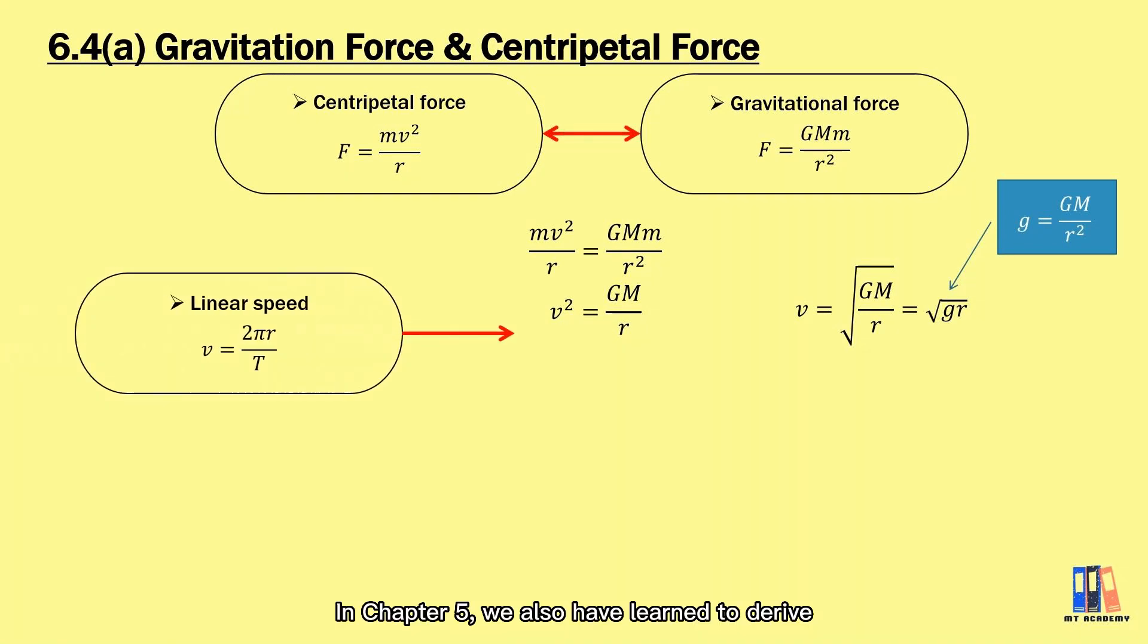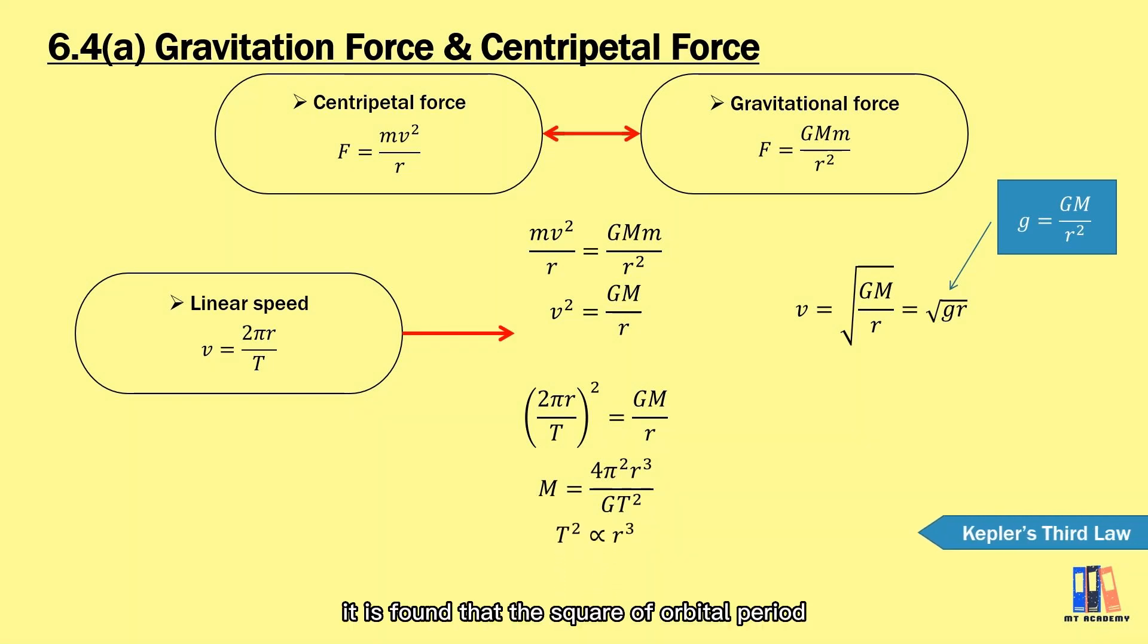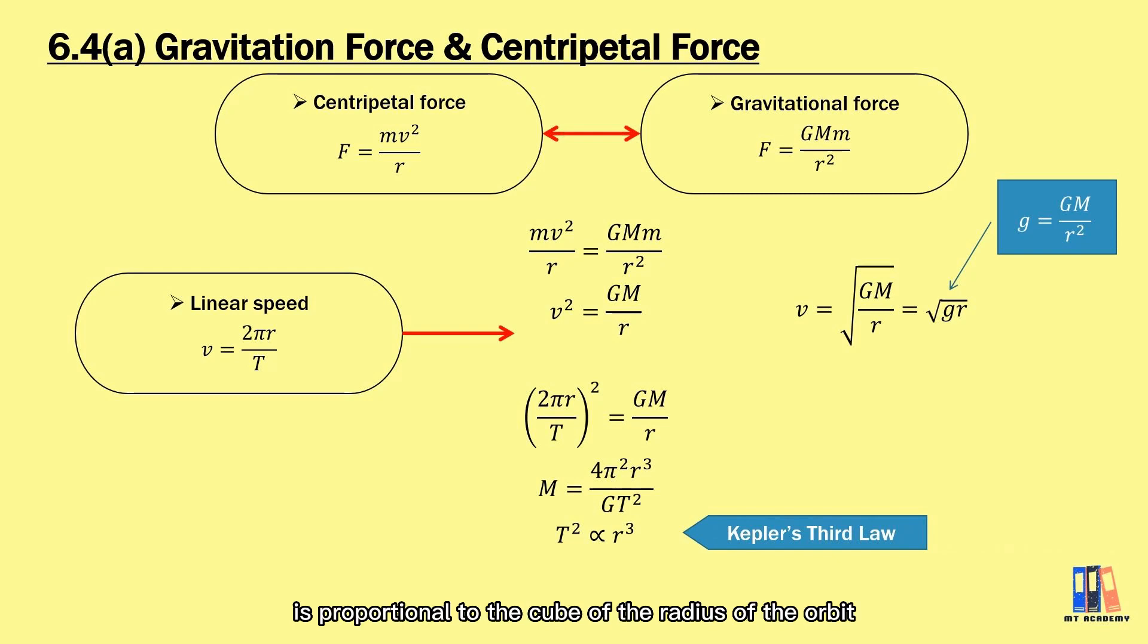In Chapter 5, we also have learned to derive using the formula of linear speed v equal to 2πr over T. Substitute in the formula, calculate the equation of the mass of planet is equal to 4π²r³ over GT². From the equation, it is found that the square of orbital period is proportional to the cube of the radius of the orbit, and this is aligned with the Kepler's law which you have learned in SPM. To conclude the question for this topic, I believe those three equations are the basic and important to be remembered. The rest can be obtained through derivation, which depends on the question.